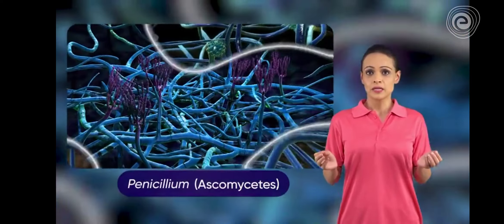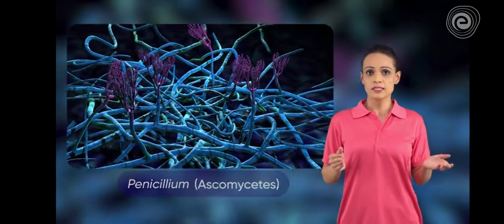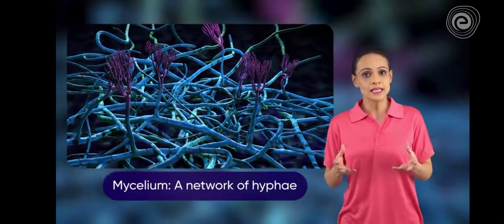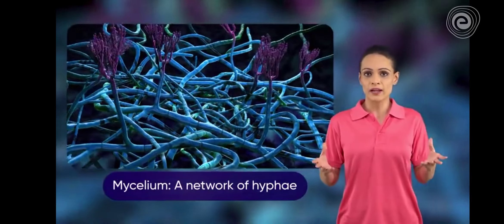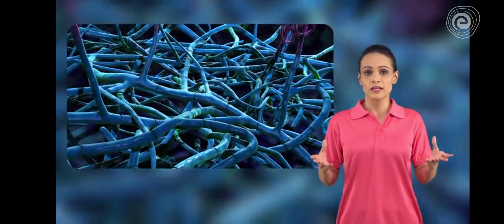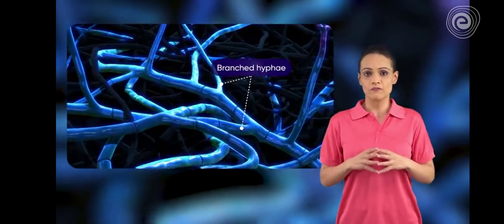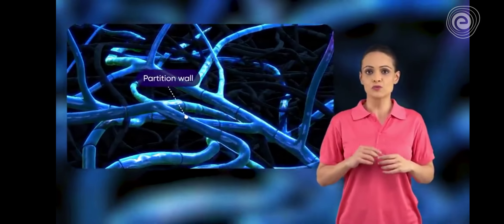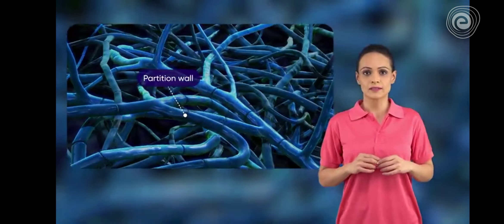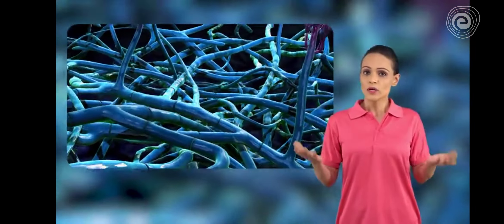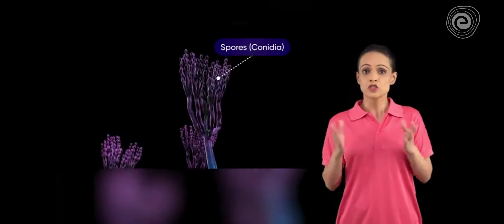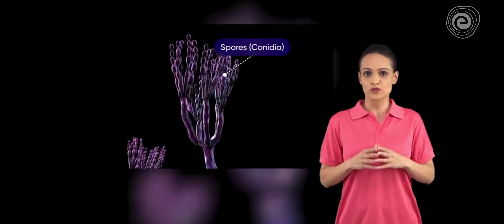Penicillium, another fungus, has mycelium made up of thread-like hyphae, is branched, and the hyphae have partitioned walls. The vertical hyphae have dense brush-like spore-bearing structures.